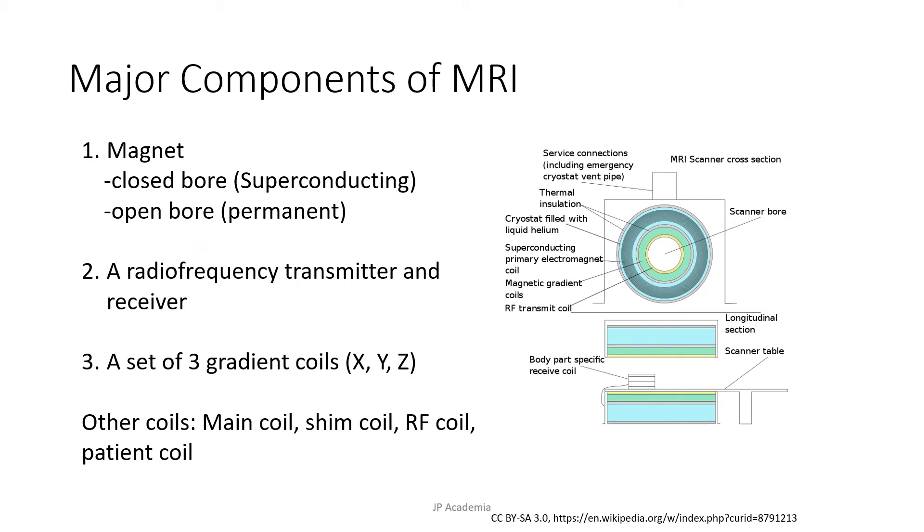When discussing MRI, the major components are the following. First, we have the magnet. Second, we have the radio frequency transmitter and receiver. Third, we have a set of gradient coils along the X, along the Y, and the Z.